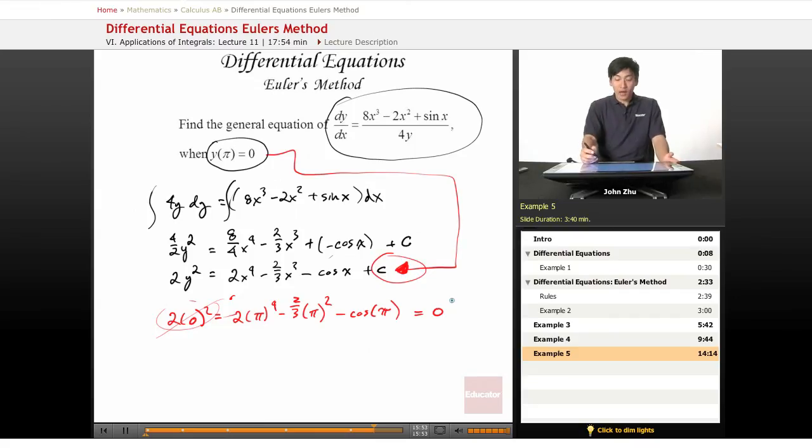Pardon me, forgot the plus c term. That was the whole point of the setup. So if we move everything over there, c equals 2 thirds pi squared minus 2 pi to the 4th plus cosine of pi.